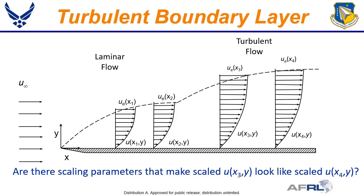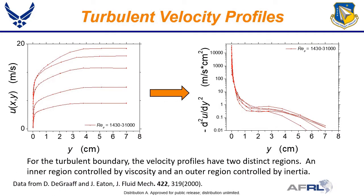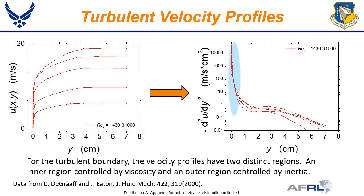The question we are interested in is whether there are scaling parameters that make the turbulent profiles at different stations along the plate appear to be similar. The turbulent boundary layer appears to be special in that the velocity profiles have two distinct regions: an inner region where viscosity is important and an outer region where it is not. This is not obvious from looking at the velocity profiles. Here are a series of velocity profiles from DeGraff and Eaton at Stanford University. From the momentum balance equation, we know viscosity will be important where the second derivative of the velocity is significant. Taking the second derivative numerically, we see the near-wall region is 4 or 5 orders of magnitude greater than in the outer region.